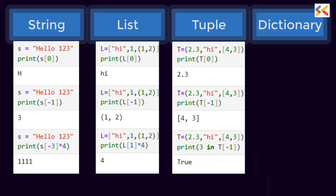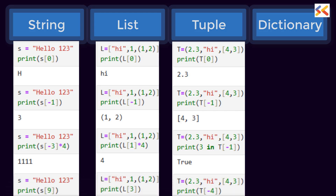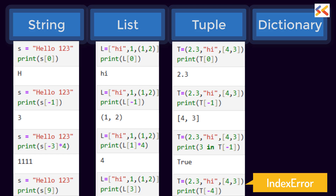I want you to also note what is the data type returned when you do indexing. In string, you will get string only as the answer, as each of the characters is string. In list and tuple, you will get whatever is the data type of the element you are extracting. The last element could be a tuple, a float or a list. Now, what happens if you give a wrong index for any of them? If you give a wrong index, indexing will always give an exception: index error.